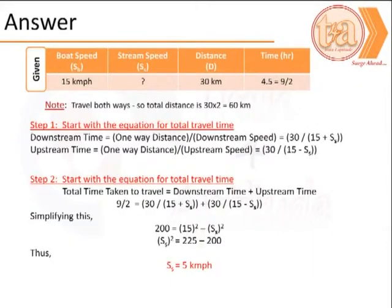We start solving the problem beginning with the information given to us. We note here that we know the speed of the boat, the distance traveled one way, and the total time for journey covering both ways. The first step is to calculate the effective speed downstream and the effective speed upstream. Note here that this part of the equation does not have the speed of the stream known, therefore we represent it by Ss.